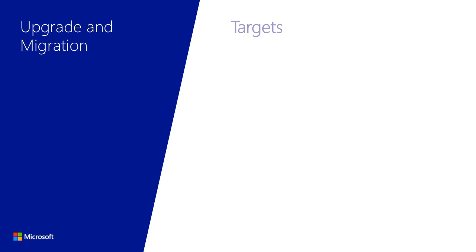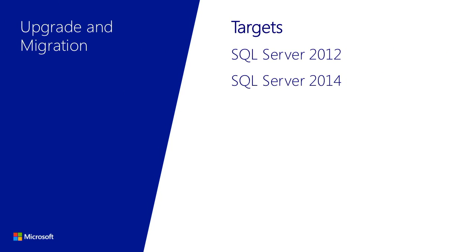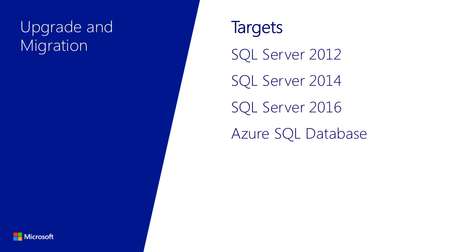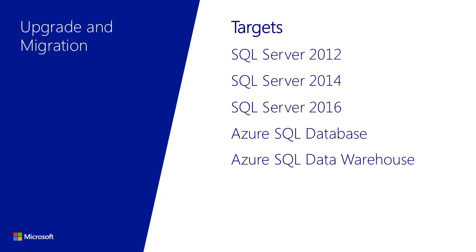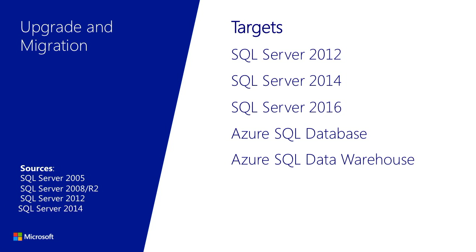What is the matrix of features and products supported by the SQL Server Upgrade Advisor? When upgrading using the Upgrade Advisor, we support moving to SQL Server 2012, SQL Server 2014, SQL Server 2016, as well as Azure SQL Database, and new to the product is Azure SQL Data Warehouse. Using the SQL Server 2016 Upgrade Advisor, you can upgrade from SQL Server 2005, SQL Server 2008 and R2 databases, as well as SQL Server 2012 and SQL Server 2014.